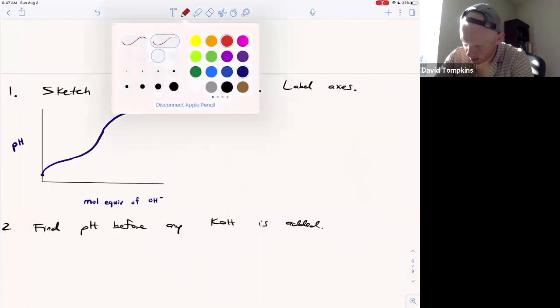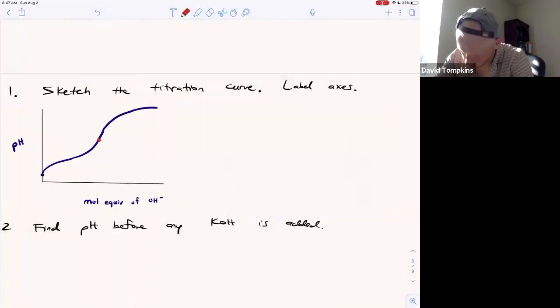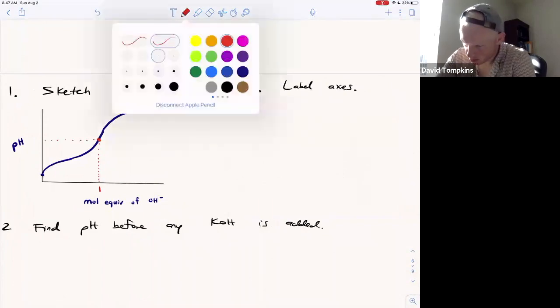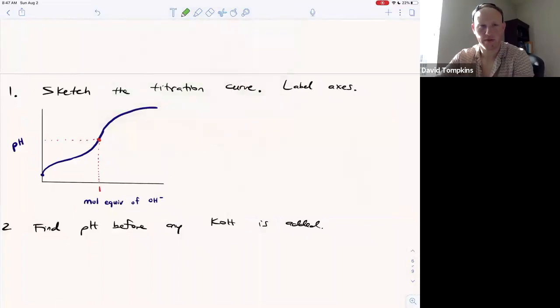It takes on this S-type curve or sigmoidal shape, where the equivalence point, when we've added one mole equivalent, is at the inflection point, and we'll solve later for that unknown pH. There are different points along this curve that you want to be able to differentially solve for pH.